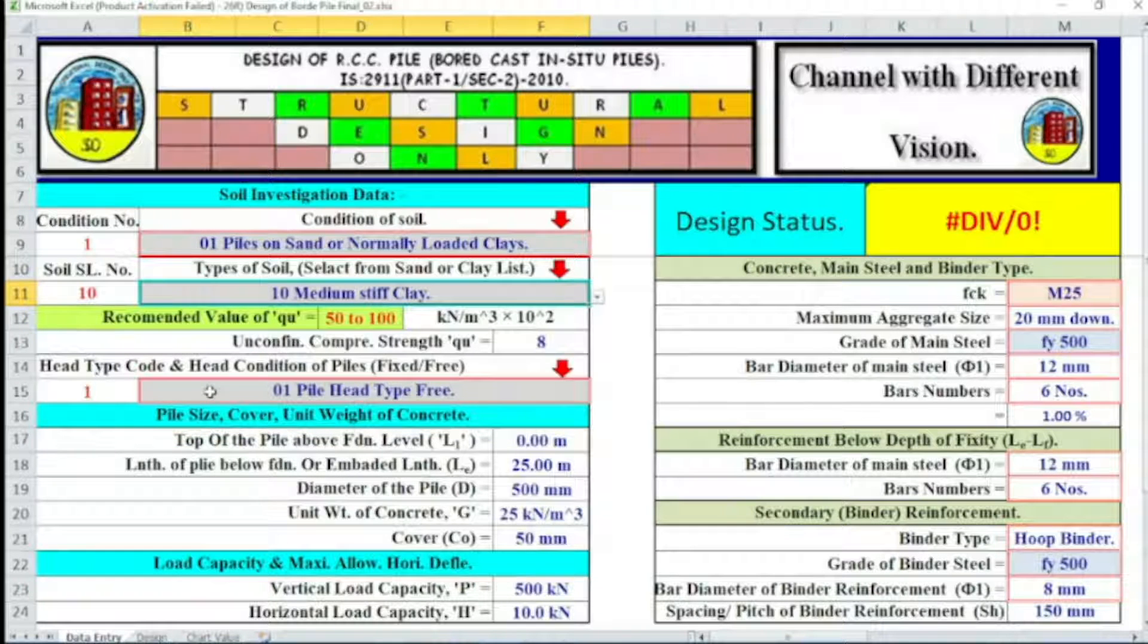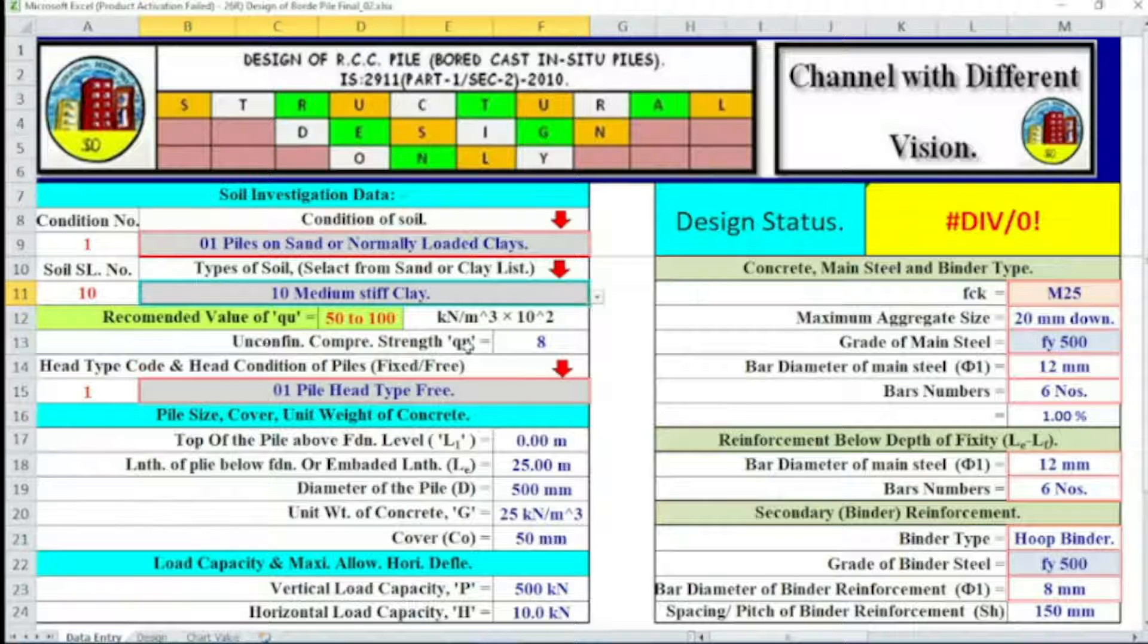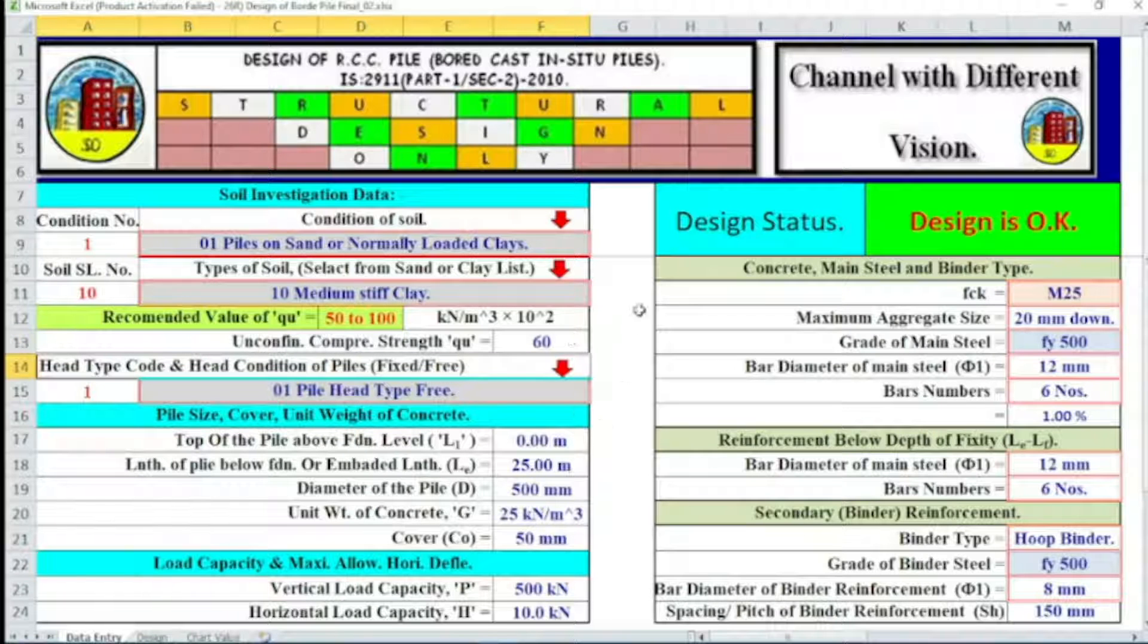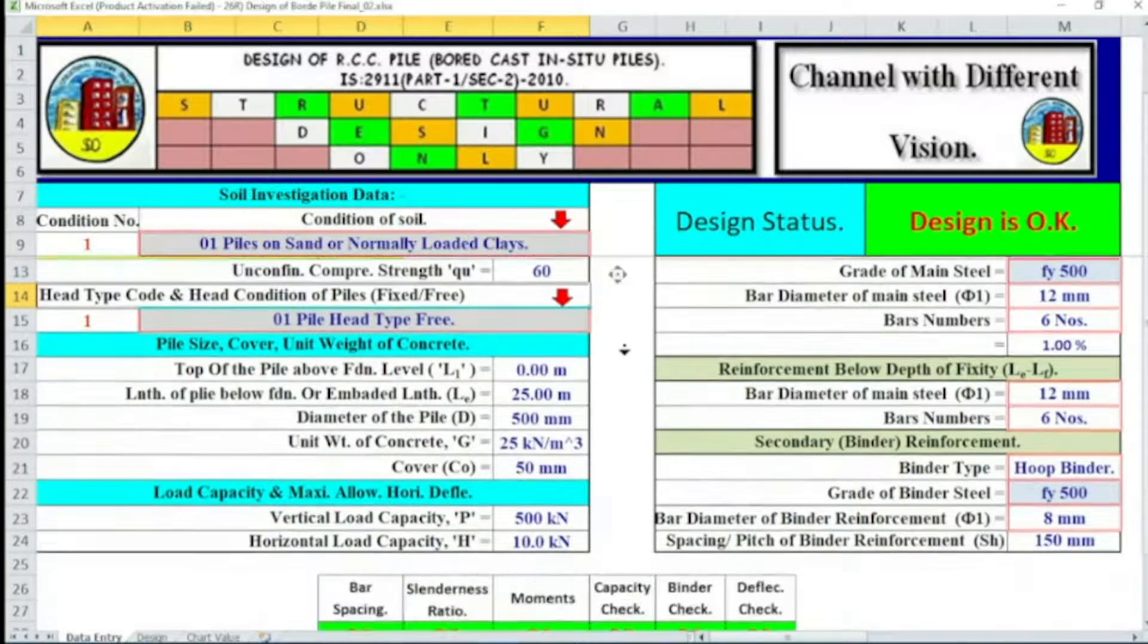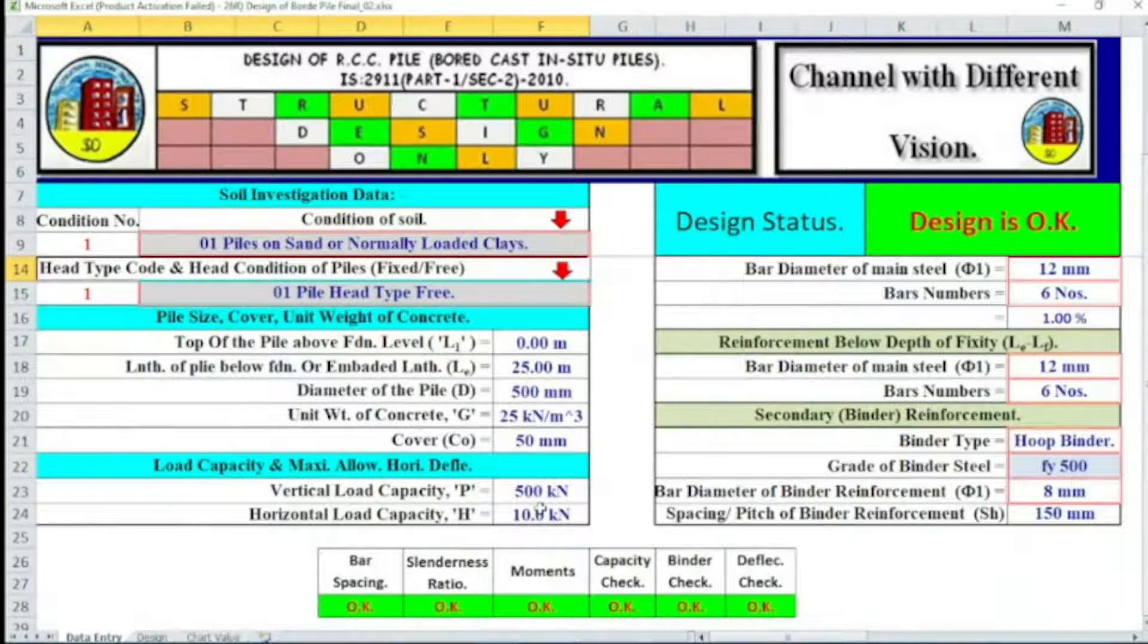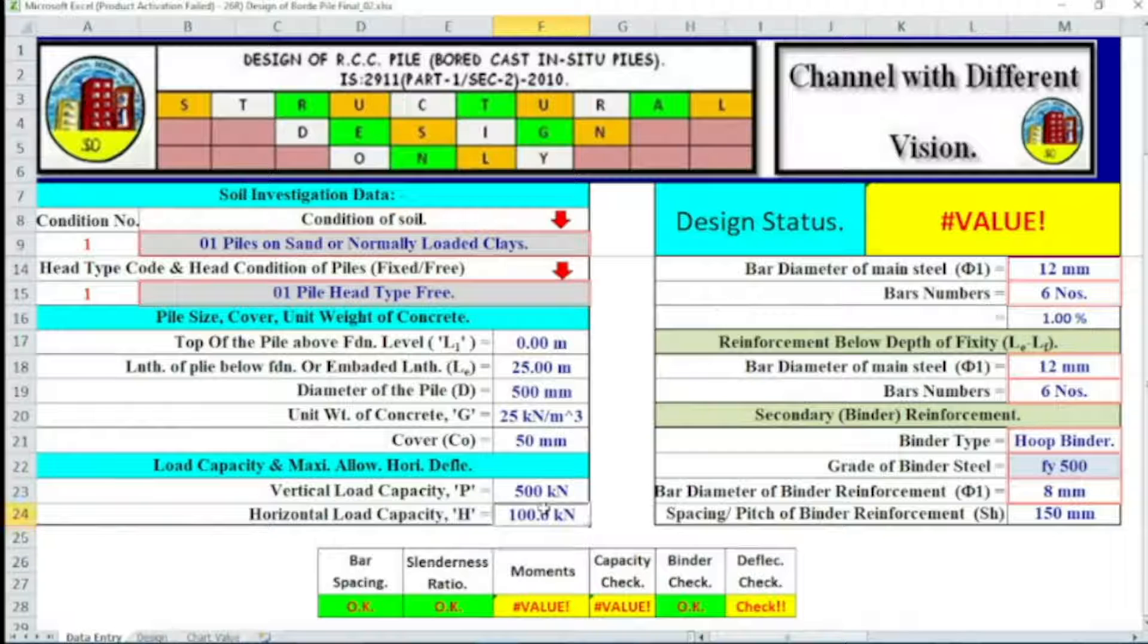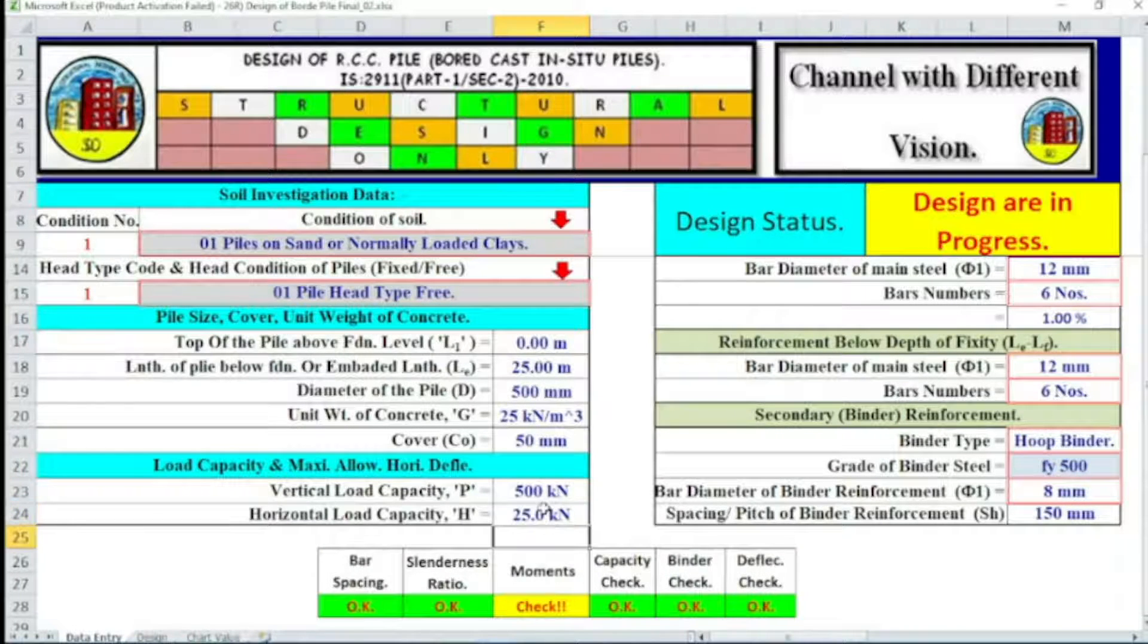Now I'm changing from loose and dry to medium thick clay. Recommended UU value 50 to 100, so I'm considering here 60. Now look at, design is okay. Now we can increase horizontal load, say 100, not okay. 50, not okay. 25, let's say 20.